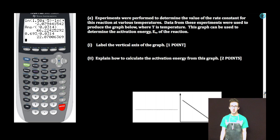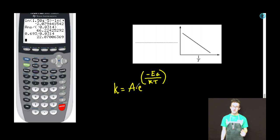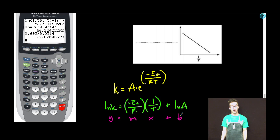Part E: Experiments were performed to determine the value of the rate constant for this reaction at various temperatures. Data from these experiments were used to produce the graph below, where T is temperature. This graph can be used to determine the activation energy of the reaction. Subpart i: Label the vertical axes of the graph. This comes back to the Arrhenius equation, which you see on your screen. Although this is no longer on the formula chart, I still think this is an important question. You can rearrange the Arrhenius equation and put it in slope-intercept form. Notice then, our Y is going to be labeled the natural log of our rate constant.